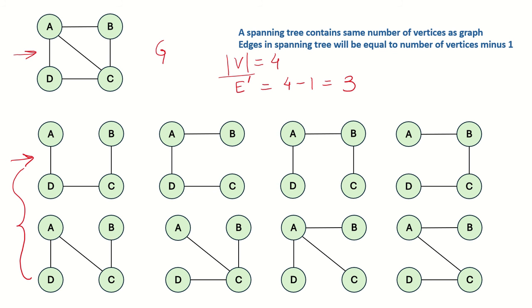These are some possible spanning trees — each of them has 4 vertices. All 4 vertices need to be present in the spanning tree. Here we can see 4 vertices connected with the minimum possible number of edges so that it remains connected, and the number of edges is 3. This is also a spanning tree with 4 vertices and 3 edges, and again here is another spanning tree with 4 vertices and 3 edges.